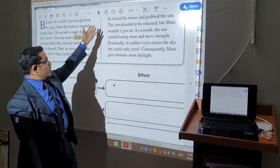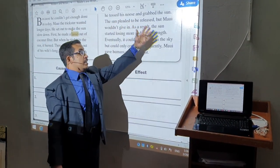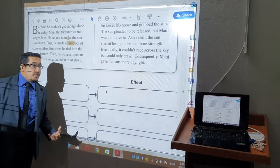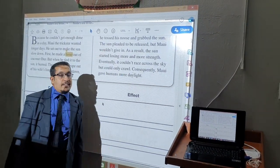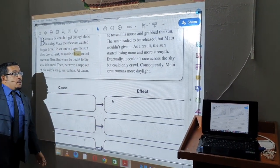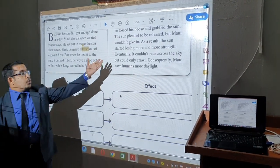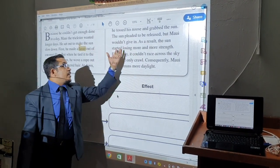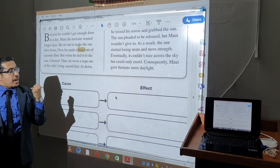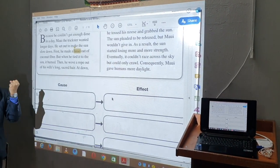What happened after this? The sun needed to be released. The sun tried to get rid of that. But Maui wouldn't let it go. So if we complete this part, as a result, the sun started losing more and more strength. It started to lose its power.